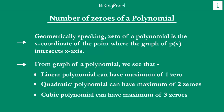A linear polynomial is of degree one, so it can have a maximum of one zero. A quadratic polynomial has a degree of two, so it can have a maximum of two zeros. A cubic polynomial is of degree three, so it can have a maximum of three zeros. It does not mean it will always have that many zeros, but it cannot have any more zeros than the degree of the polynomial.